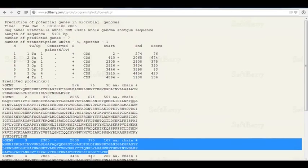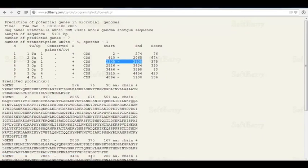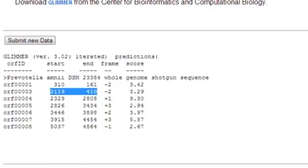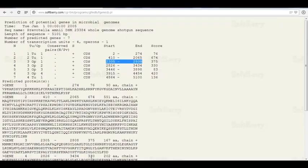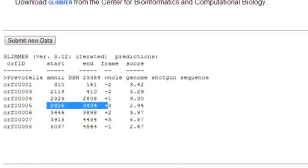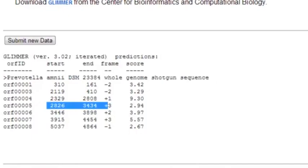Now, let's compare our operon results to Glimmer. 2305 to 2808. Well, we got 2329 to 2808. That's pretty close. Again, the start codon differs a little bit. 2826 to 3434, back to Glimmer. Well, that's exactly the same. So Glimmer and FgenesB predicted those exactly the same.